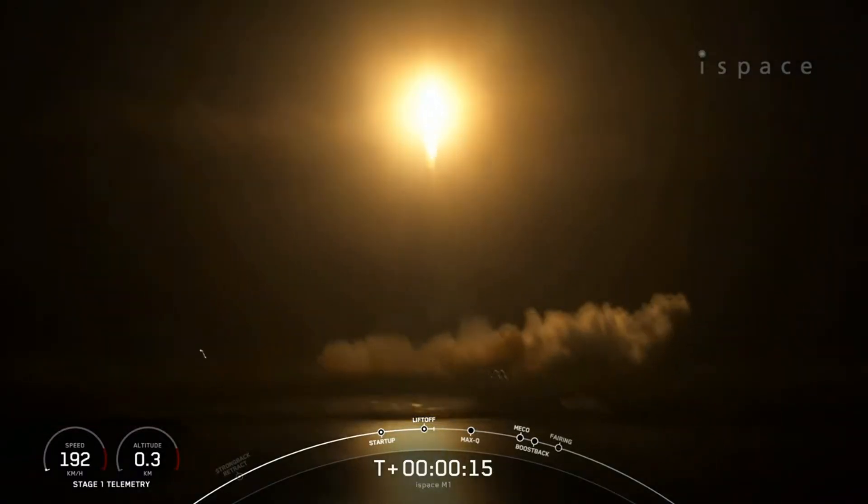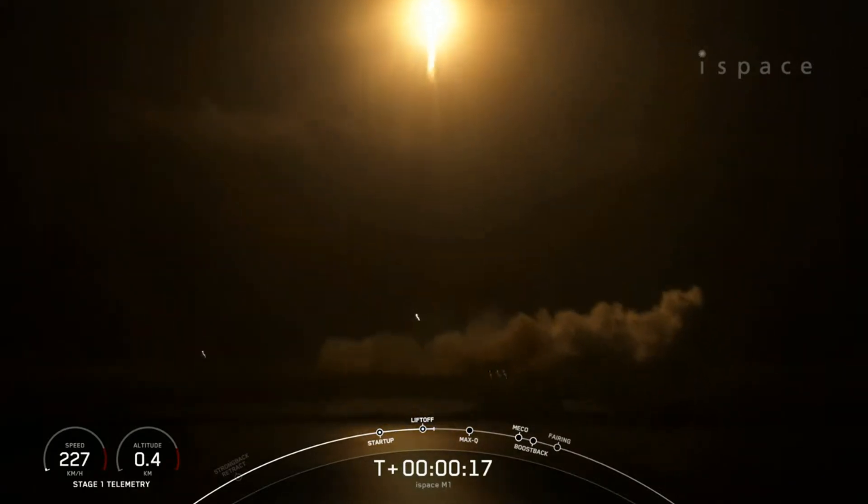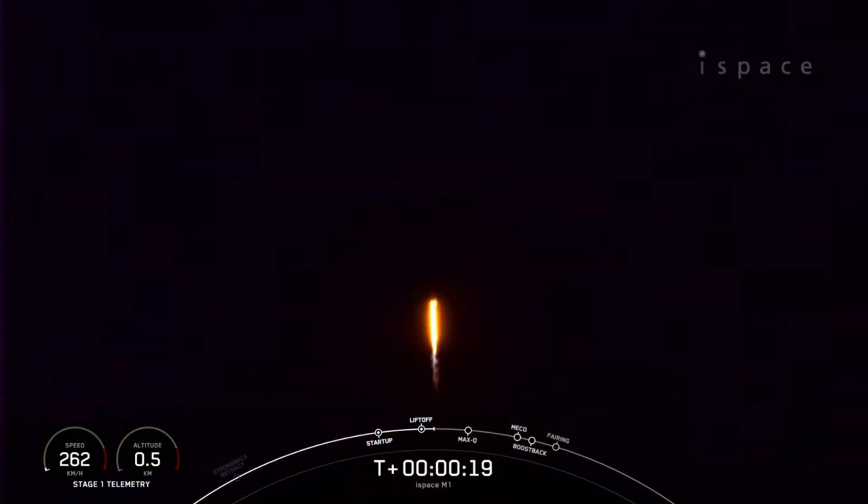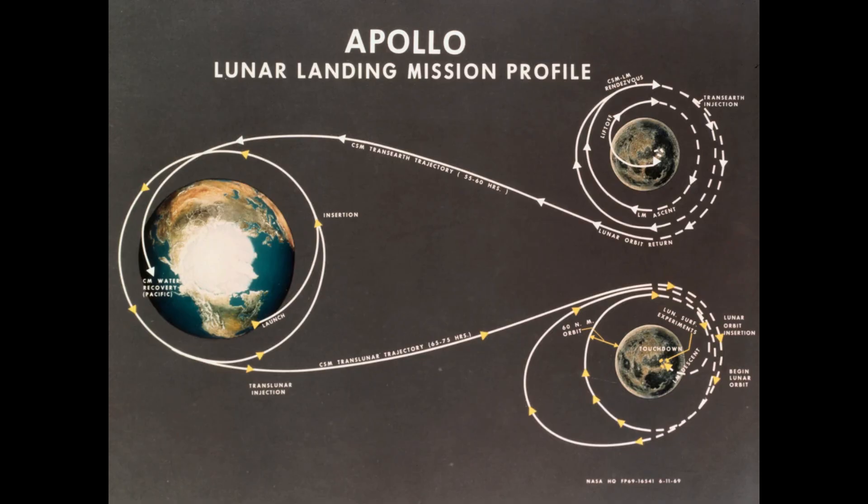If you've played Kerbal Space Program, or if you remember Apollo, you probably have a pretty good idea of what it takes to get a spacecraft into orbit around the moon. You start out in low Earth orbit, you make a burn that lifts the apogee of that orbit out to where the moon is, and then when it encounters the moon at the other end, you perform a deceleration burn that will put your spacecraft into orbit around the moon.